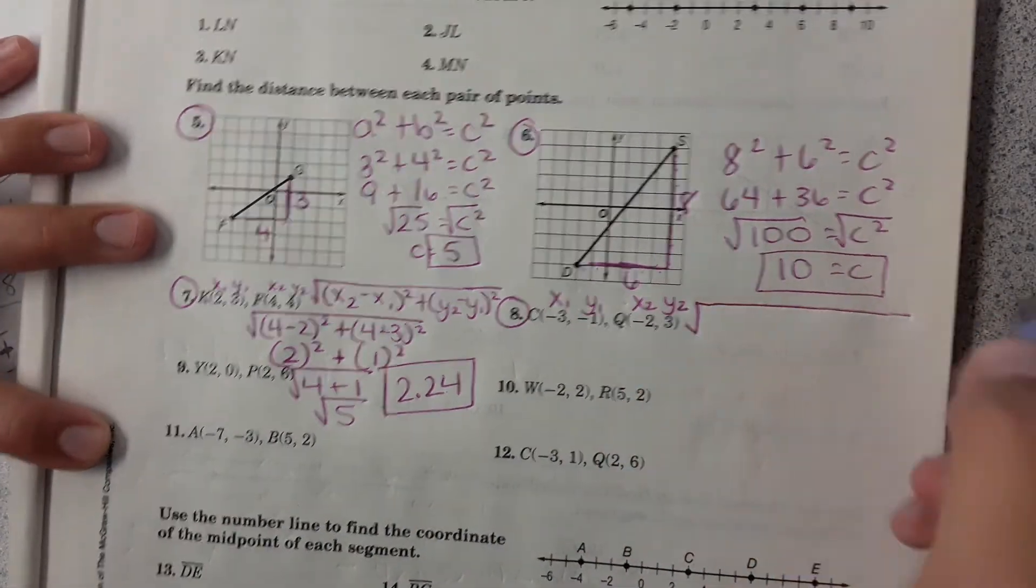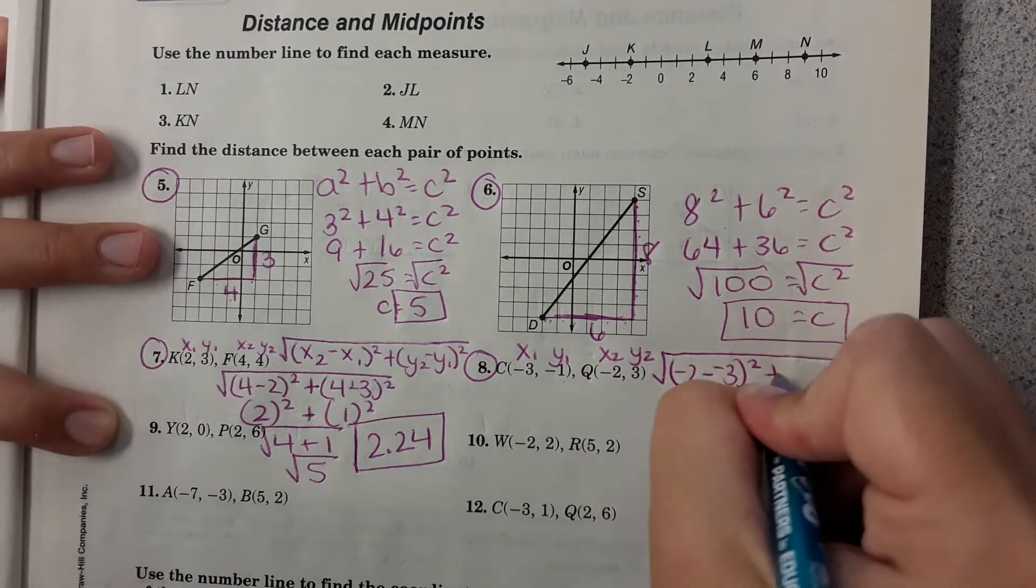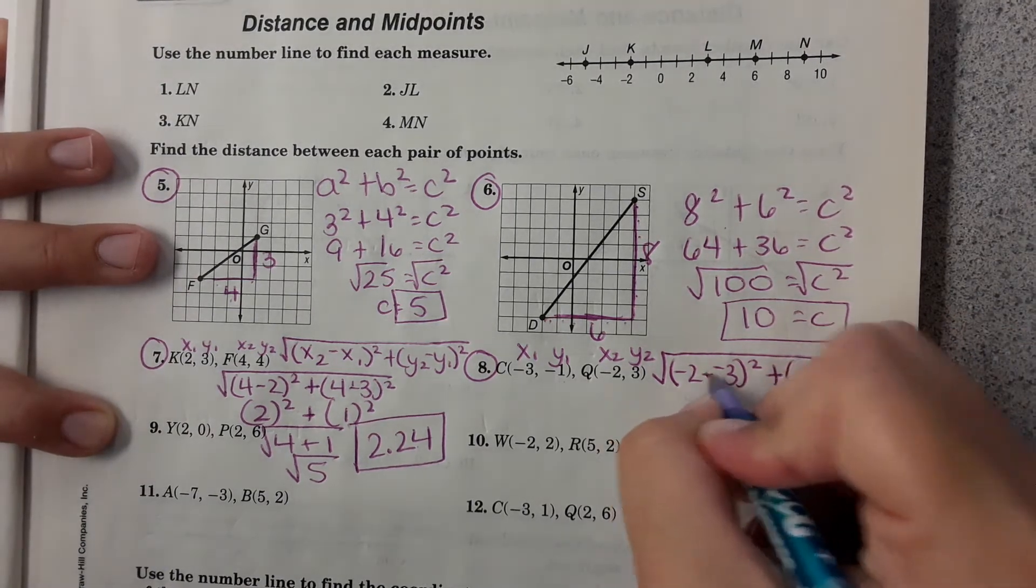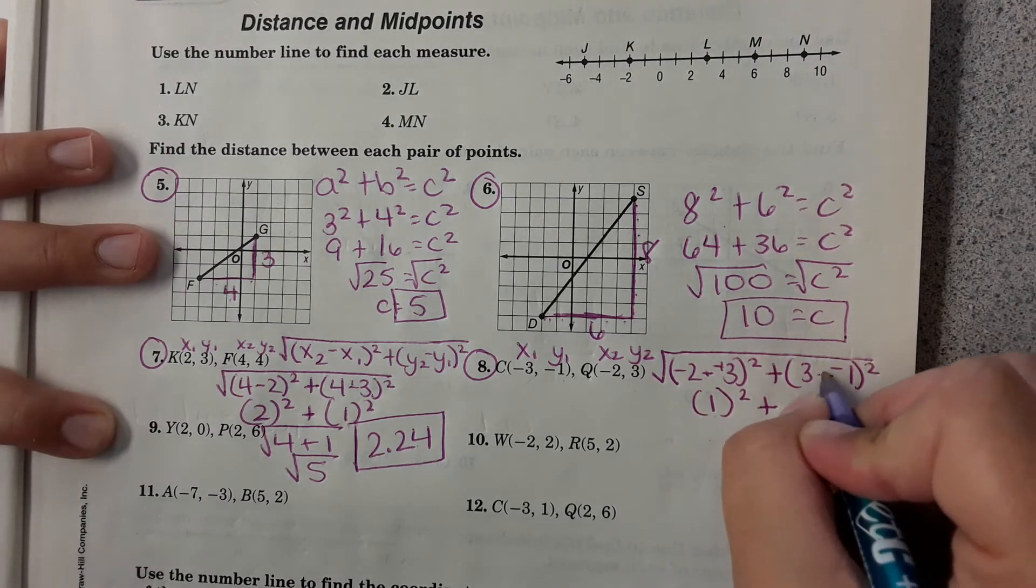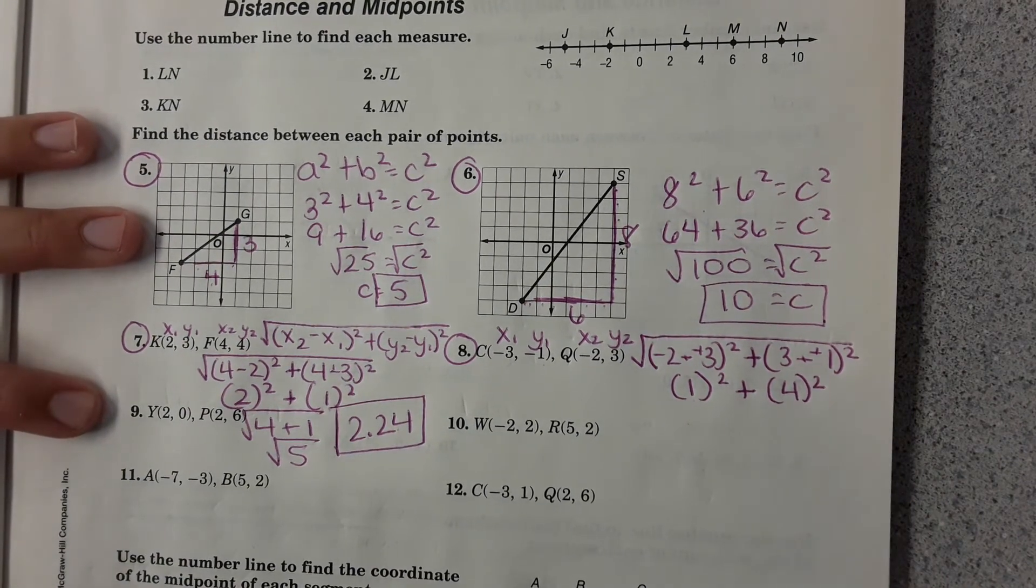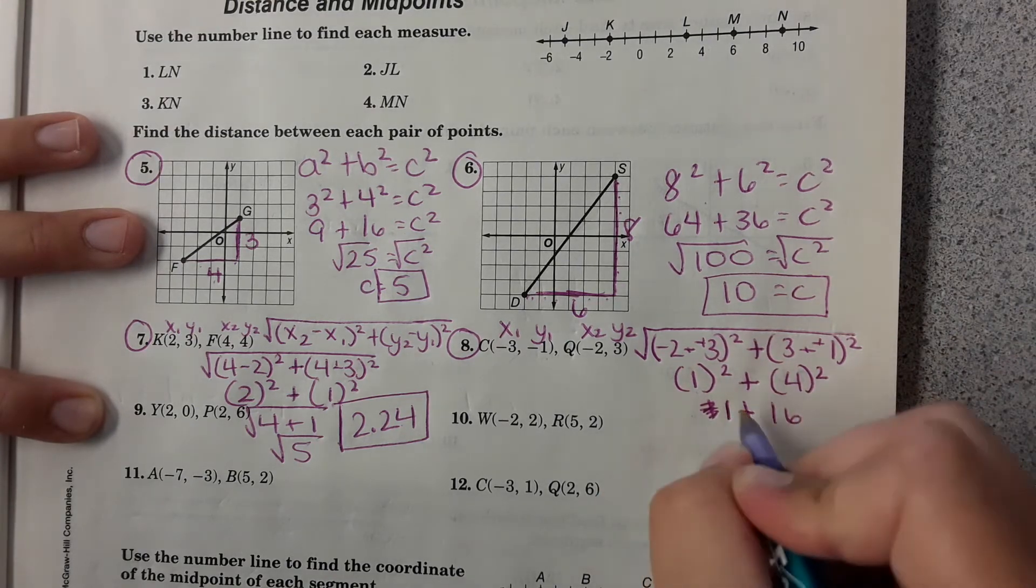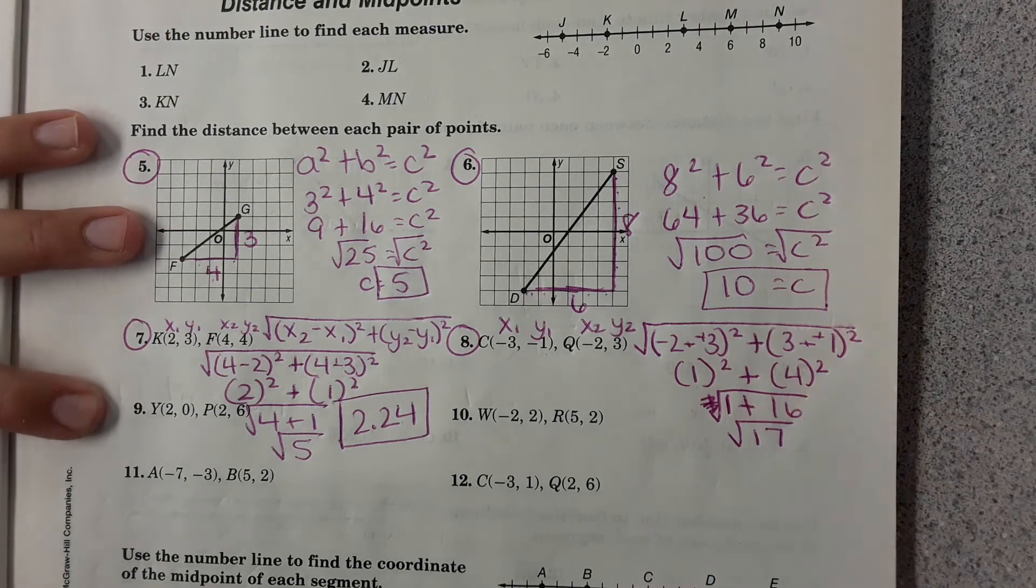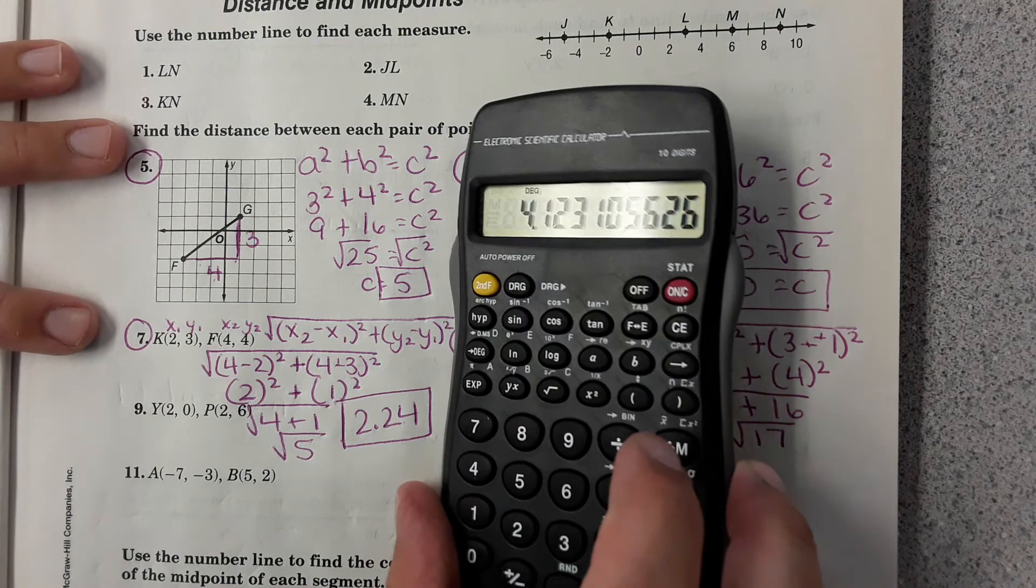Okay. Now I'm going to plug it into the equation. And square root of 17 is 4.12.